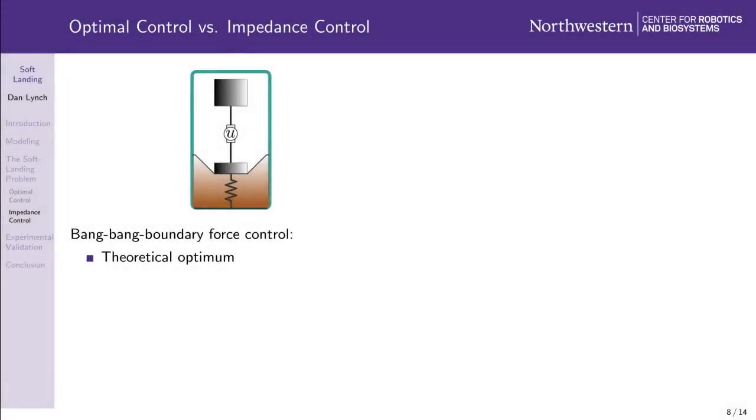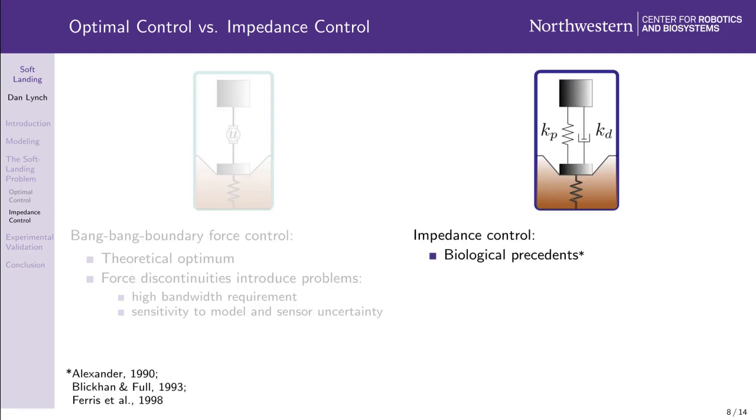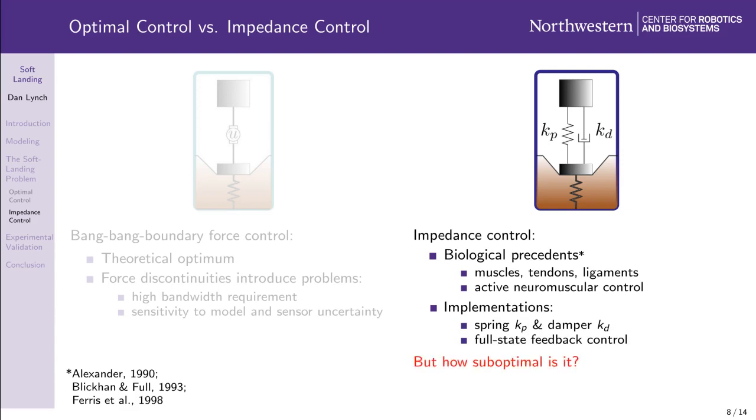While the open-loop three-phase force control policy represents a theoretical optimum, its inherent force discontinuities make implementation problematic because they require high bandwidth and result in high sensitivity to uncertainty in model parameters and sensor measurements. On the other hand, there are biological precedents for impedance control in the form of muscles, tendons, and ligaments, along with examples of active impedance control in locomoting animals. Also, impedance can be implemented mechanically, with springs or dampers, or virtually, through feedback control. Regardless of implementation, we'd like to figure out how impedance control compares to our optimal open-loop force control policy in terms of minimizing foot penetration depth.